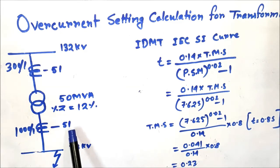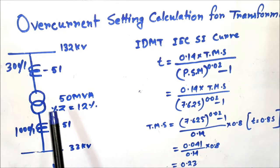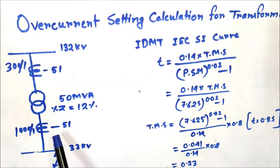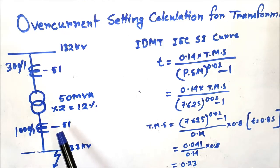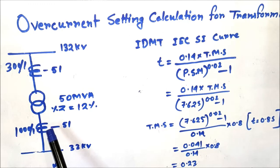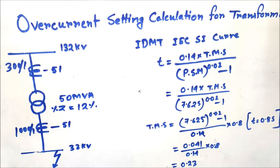To summarize: the TMS for the LV overcurrent relay is approximately 0.18, and for the HV overcurrent relay it is 0.23. The current set should be 110% of full load current for both LV and HV sides. This is how we calculate the overcurrent relay settings for LV and HV relays on transformers. If you liked the video, please subscribe to my channel and press the bell button for notifications. Thank you for watching.